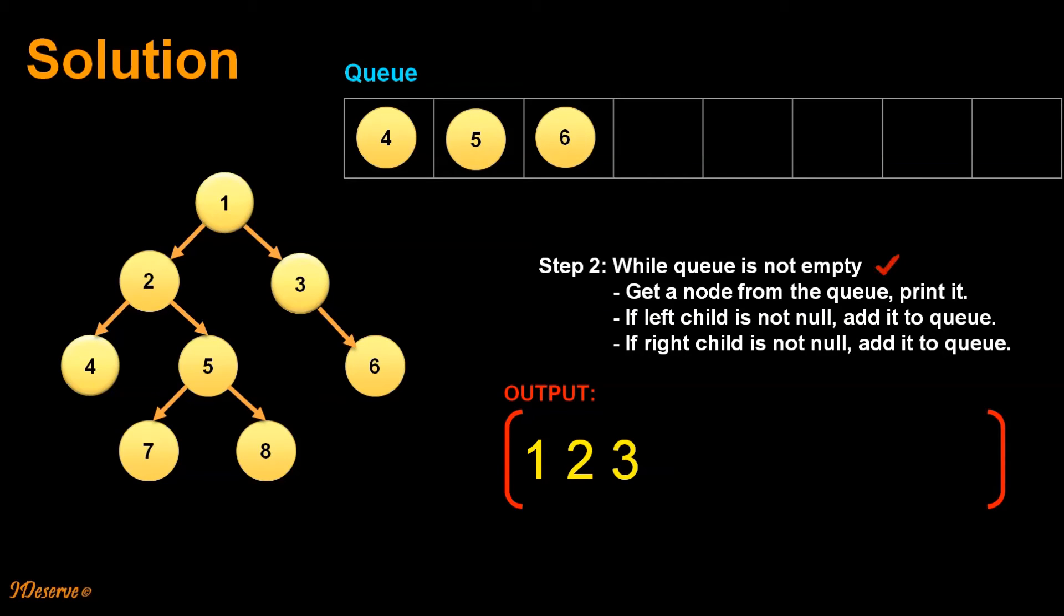We move on to next iteration where we delete node 4. Since 4 is leaf node nothing gets added to queue. In next iteration node 5 gets deleted and node 7 and 8 gets added to the queue.